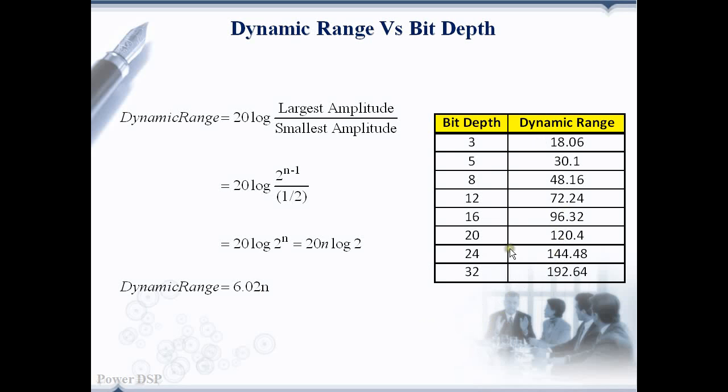This table gives the dynamic range for various bit depth values. A bit depth of 8 gives a dynamic range of approximately 48 dB. A bit depth of 16 gives a dynamic range of about 96 dB and so forth.